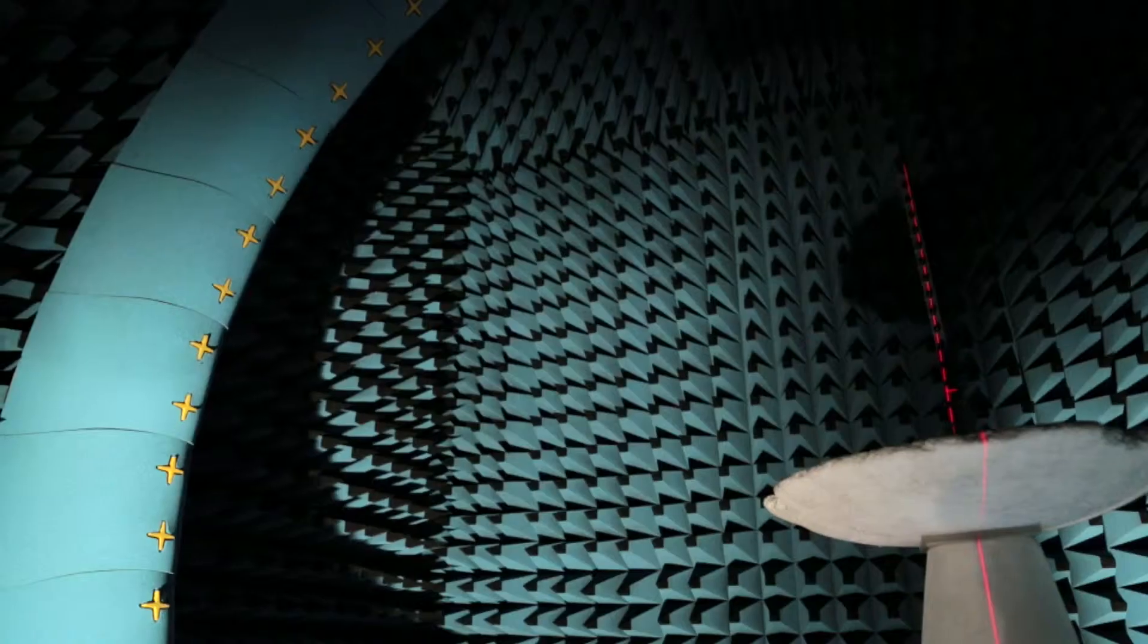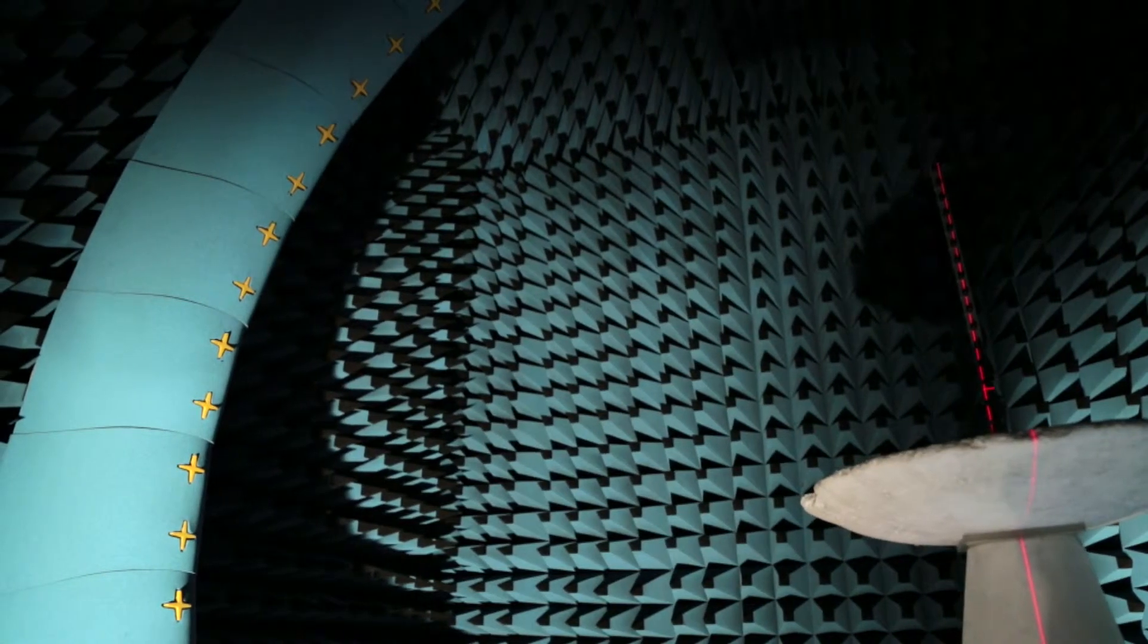The thing that strikes you when you first see the Satomo chamber is the huge arc of 64 sensors placed around the device.